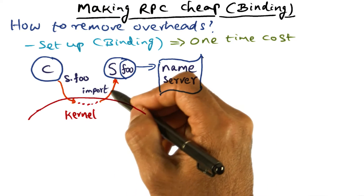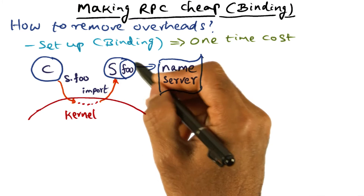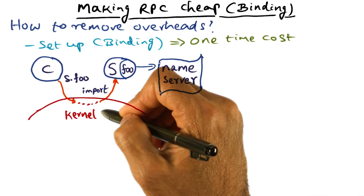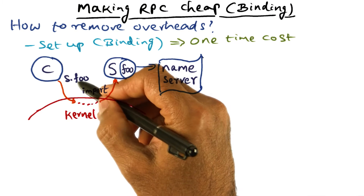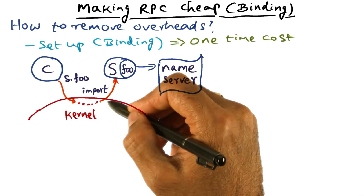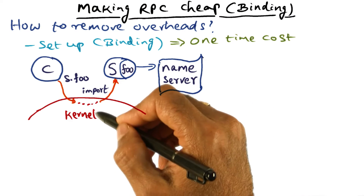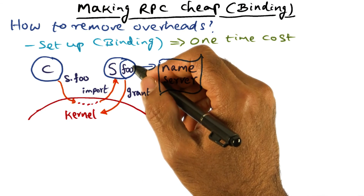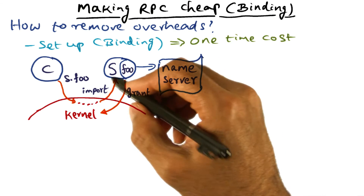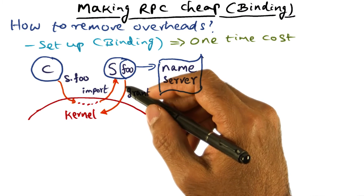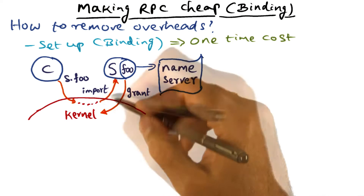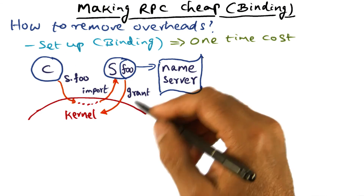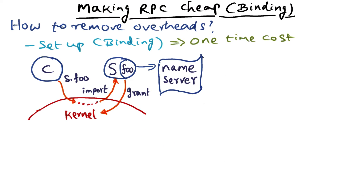Therefore, what the kernel has to do is check with the server whether this is a legitimate, bona fide client that can make calls on the entry point procedure foo. The kernel makes an upcall into the server saying: there is a client with this identity that wants to make a call on your entry point procedure foo. If the server recognizes that this client is a bona fide client that can make this call, it grants permission via the kernel that this client can indeed call its entry point procedure foo.